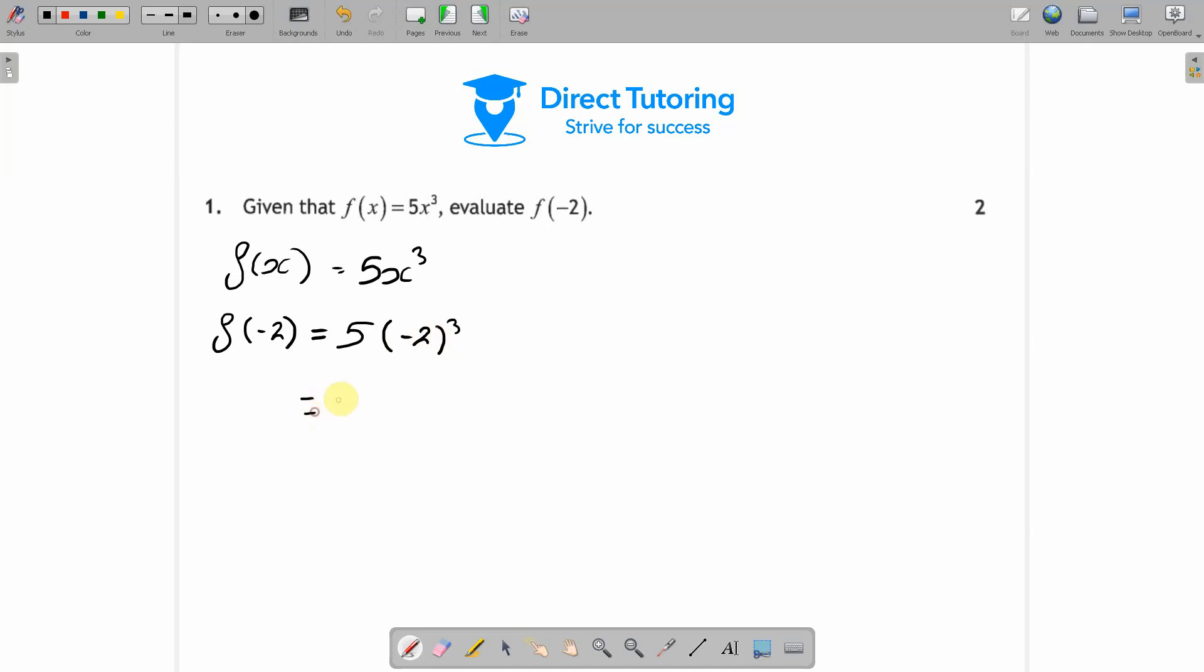If we keep the 5 as it is, minus 2 cubed is minus 2 times minus 2 which is positive 4 times another minus 2, which will give you minus 8. And then 5 times minus 8 will give you negative 40.